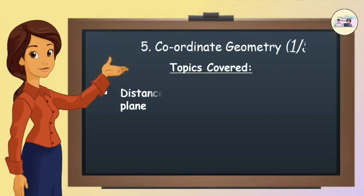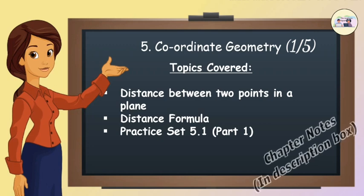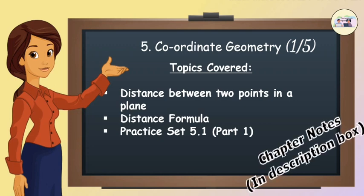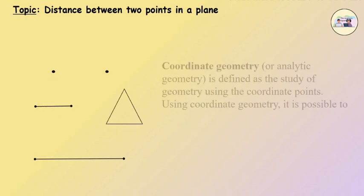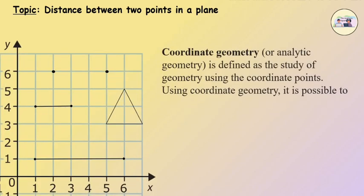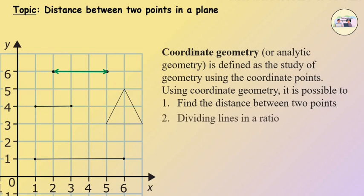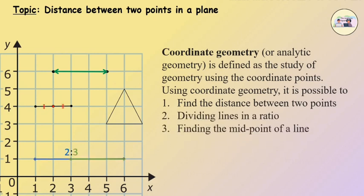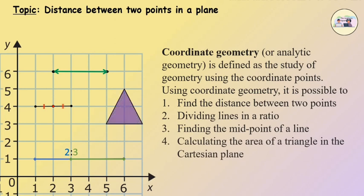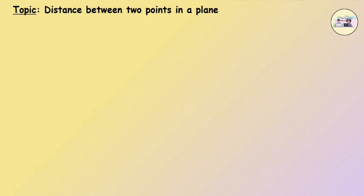Coordinate geometry, or analytic geometry, is defined as the study of geometry using coordinate points. Using coordinate geometry, it is possible to find the distance between two points, dividing lines in a ratio, finding the midpoint of a line, calculating the area of a triangle in the Cartesian plane, etc. We know how to find the distance between any two points on the number line.